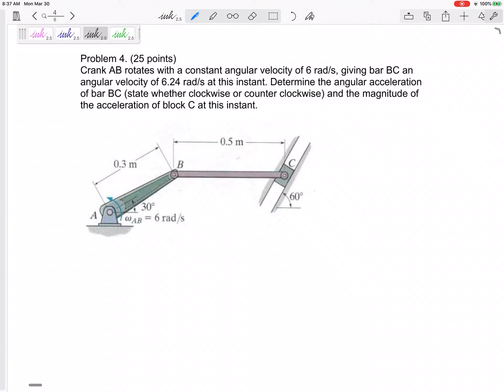All right, last problem and acceleration problem. Crank AB rotates with a constant angular velocity of 6 radians per second. Let's think about that for a second. Crank AB rotates with a constant, maybe we'll come back to that, constant angular velocity of 6 radians per second, giving bar BC an angular velocity of 6.24 radians per second at this instant.